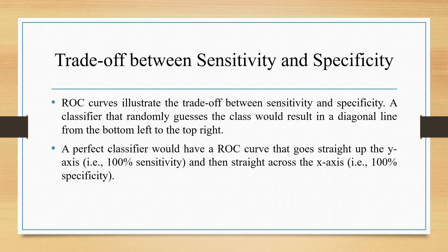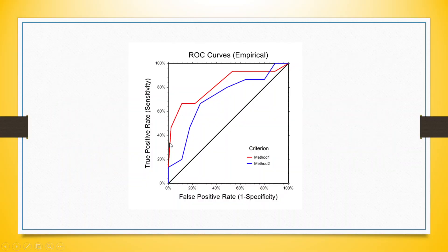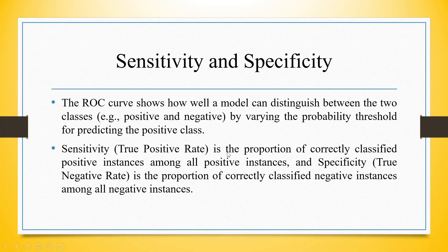A classifier that randomly guesses the class would result in a diagonal line from the bottom left to the top right — the dark line which you can see. It's 50-50. The model is not working at all — it's guesswork. We want our model to go beyond this diagonal line. You can see the blue and red lines, so that we can say it is able to classify the classes properly.